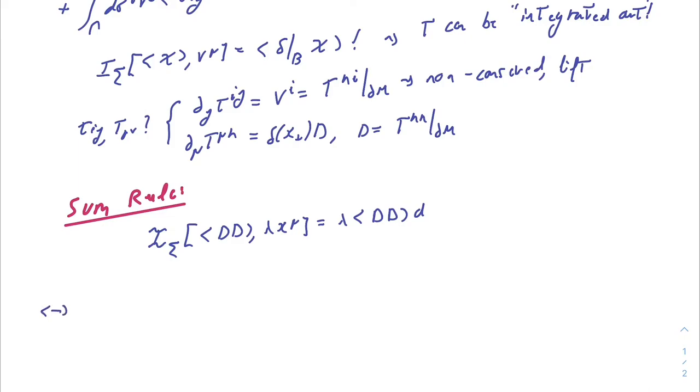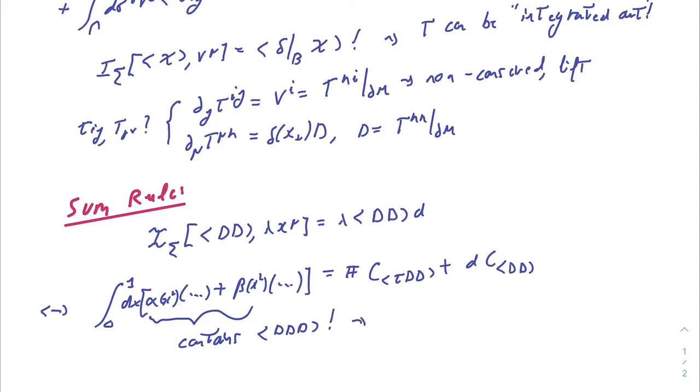Then, rewriting this in terms of the correlation function TDD that we wrote before and looking at a convenient parametrization, we can actually derive some integral formula that relates alpha and beta to the CFT data of this boundary stress tensor tau and of the two-point function coefficient of the displacement operator.